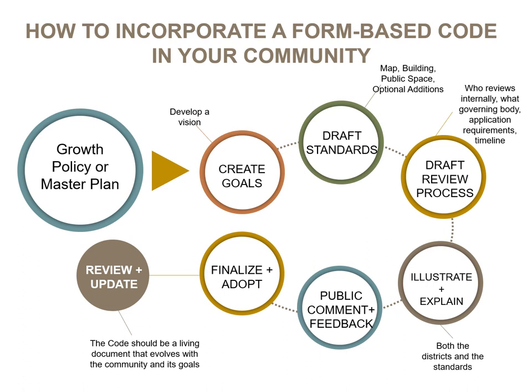Incorporating form-based code in your community involves six steps. Step 1: create goals based on growth policies, master plans, and community input — develop a vision. Step 2: draft building and public space standards. Step 3: draft the review process, identifying who typically reviews — staff, then design review board, or other governing body. Step 4: illustrate and explain the districts and standards. Step 5: allow for public comment and feedback and adjust accordingly. Step 6: finalize and adopt. Thank you for listening to this webinar. For more information, visit the Montana Department of Commerce Community Technical Assistance Program online or contact them directly.